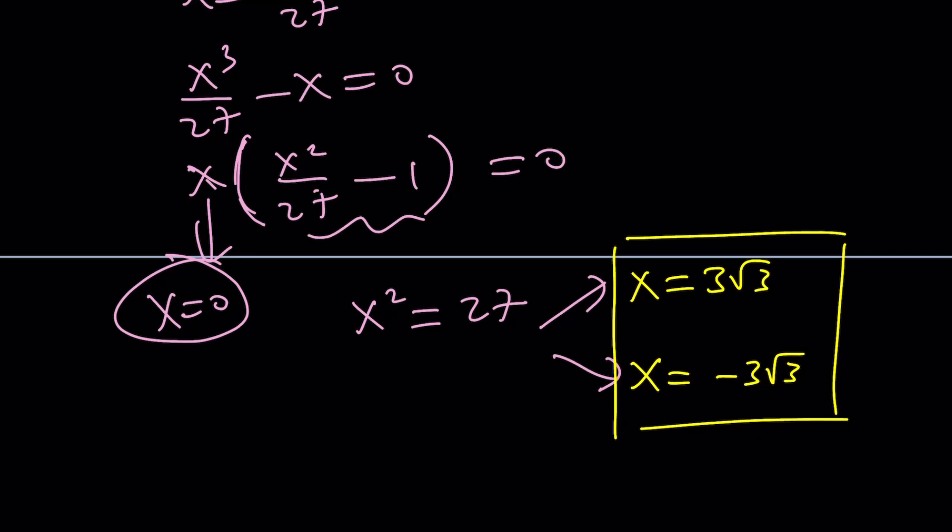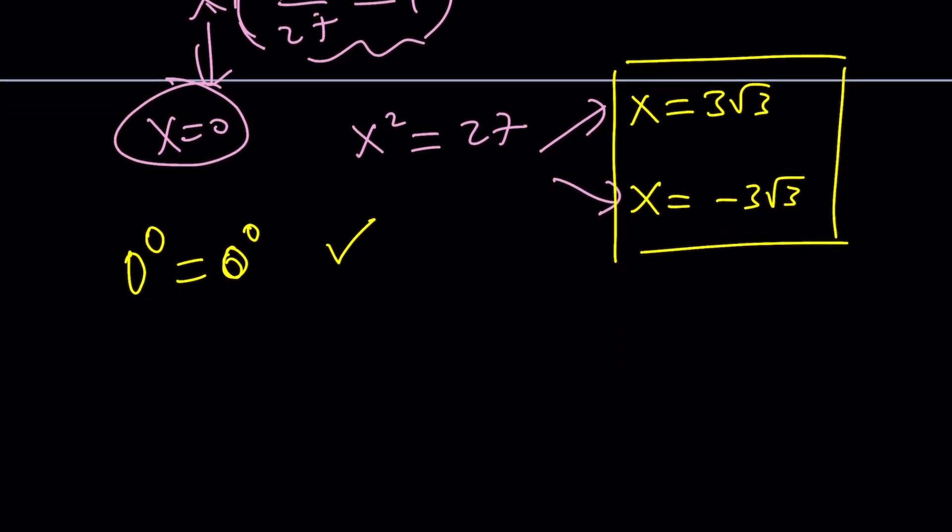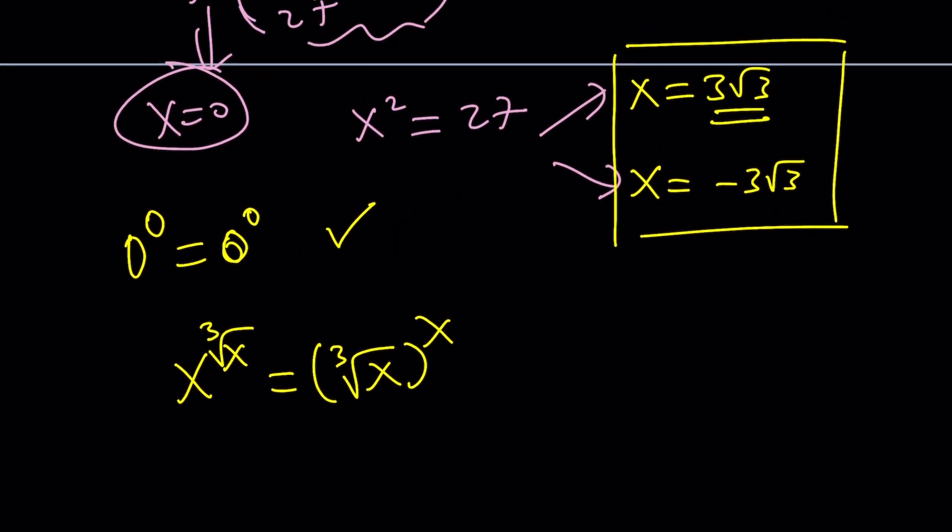x equals zero is going to give us zero to the power zero equals zero to the power zero. Hopefully, you believe that is correct, even though you may claim that zero to the power zero does not equal one. But our original equation was x to the power cube root of x equals cube root of x to the power x. If you replace x with three root three, I think that's going to work, probably. But let's go with the negative solution because negative solution might fail. That's more likely.